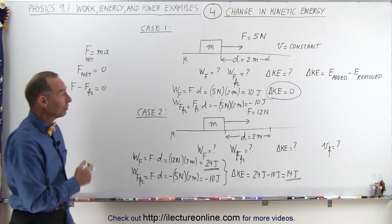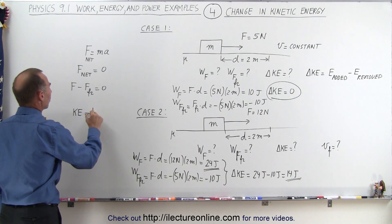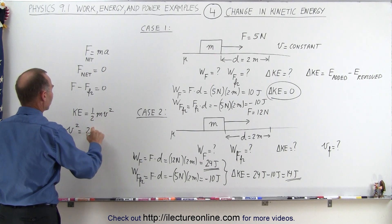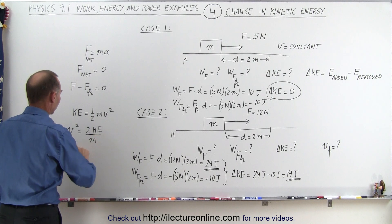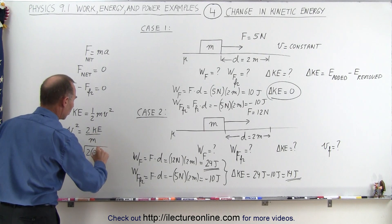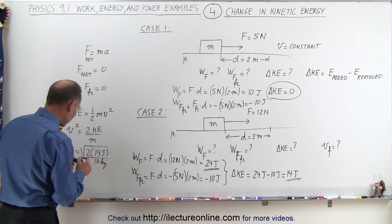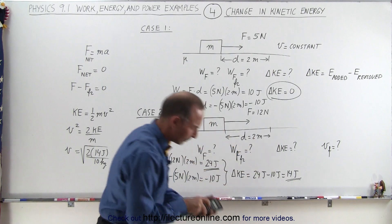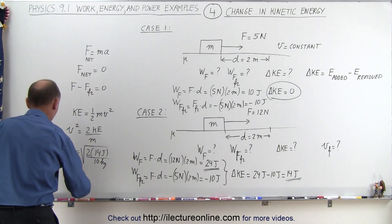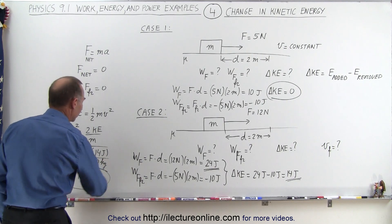Finally, we find the final velocity. Since the block started from rest, the final kinetic energy equals one-half mv squared. Solving for v: v equals the square root of 2 times the kinetic energy divided by the mass. That's the square root of 2 times 14 joules divided by 10 kilograms, which is the square root of 2.8, giving a final velocity of 1.67 meters per second.